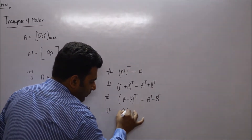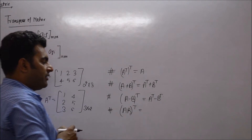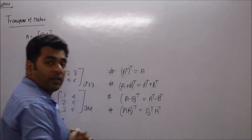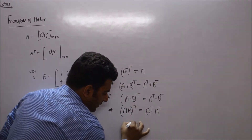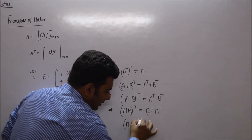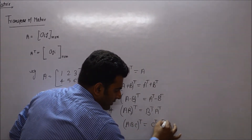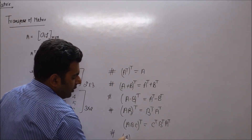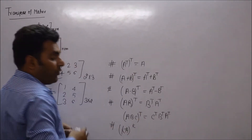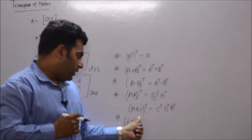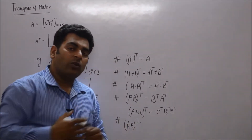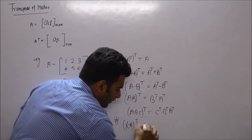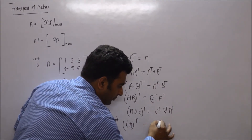The fourth property is that the transpose of a product of matrices follows the reversal law: (AB)ᵀ = BᵀAᵀ. In general, for three matrices, (ABC)ᵀ = CᵀBᵀAᵀ. One more property: the transpose of a scalar multiple of a matrix is (kA)ᵀ = kAᵀ, since transpose is a property of the matrix and not of the constant.